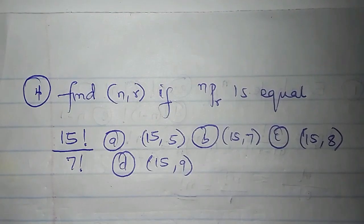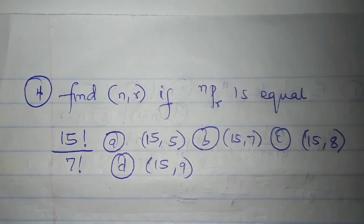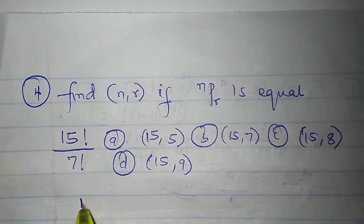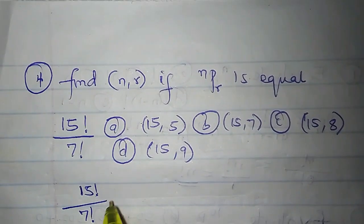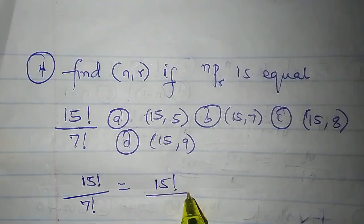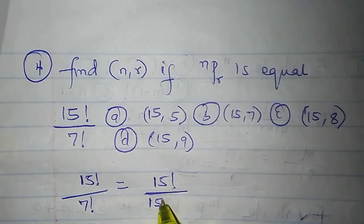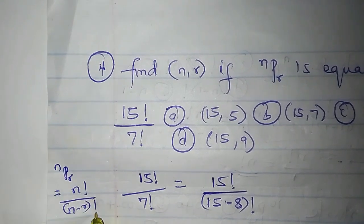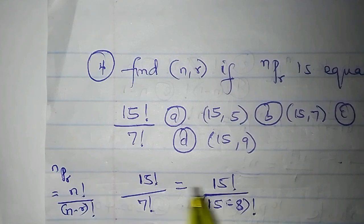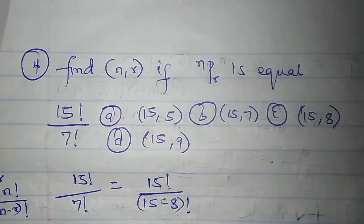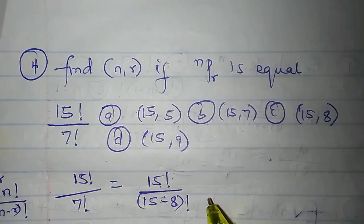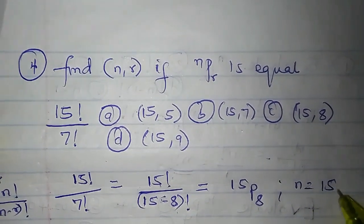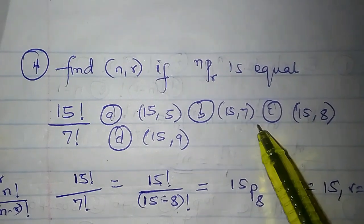Similar to question 3, question 4 asks: find n and r if nPr equals 15 factorial over 7 factorial. I can write 7 factorial as (15 − 8) factorial. Comparing with nPr = n factorial over (n − r) factorial, n is 15 and r is 8. So 15 factorial over (15 − 8) factorial is 15P8. Option C is correct.